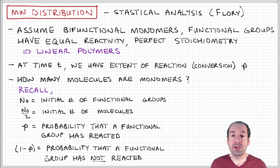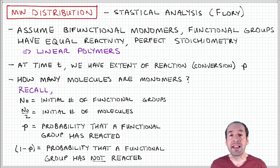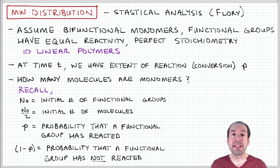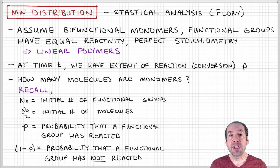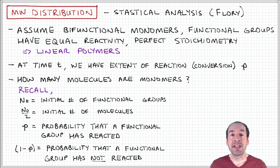In order to do that, we need to use a statistical picture that allows us to count all of the monomers, dimers, trimers, et cetera, in the sample, add them all up, and establish what the distribution function is. Once we do that, we can calculate molecular weight averages. And we'd like to see how those parameters are also related to the extent of reaction, so that will tell us how, as the reaction progresses, the distribution of chain lengths also evolves.